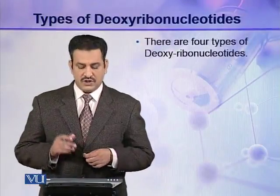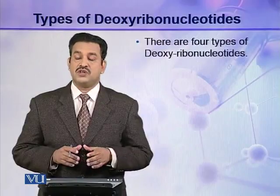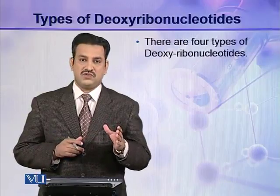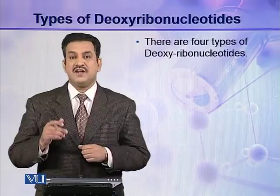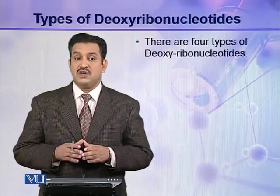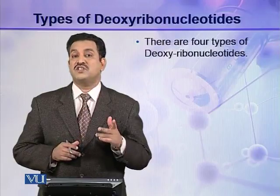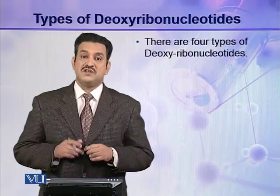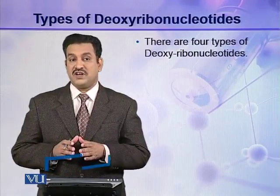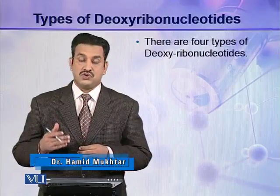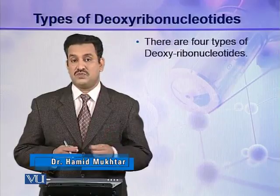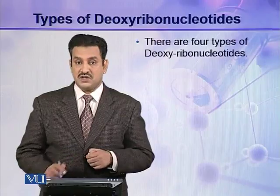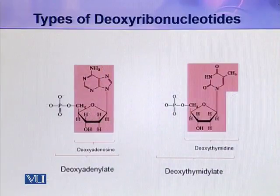Let us come to the types of deoxyribonucleotides. As you have seen in a nucleotide molecule, there are three components: phosphoric acid, pentose sugar, and a nitrogenous base. Two components are the same in all deoxyribonucleotides — phosphoric acid and pentose sugar. The third component, the nitrogenous base, varies. So on the basis of the type of nitrogenous base, there are four types of deoxyribonucleotides present in a DNA molecule.